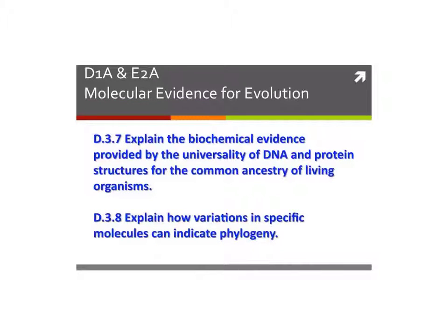By the end of this unit, you should be able to explain how scientists use DNA and protein, these molecules, to explain the universality of all living things and how we use that to explain how we all have common ancestors. Which means we can use these molecules to indicate which phylum we belong into and class and order and family and genus and species.